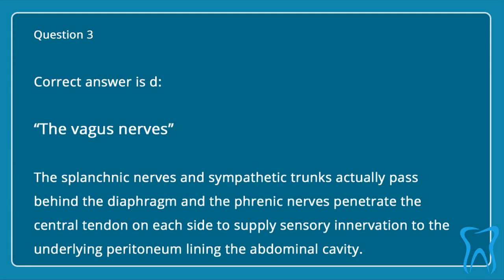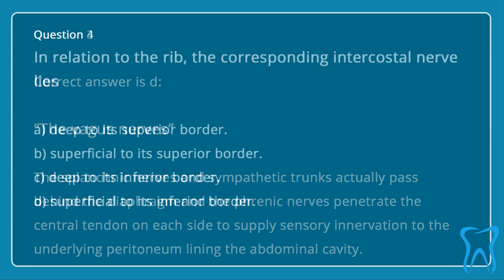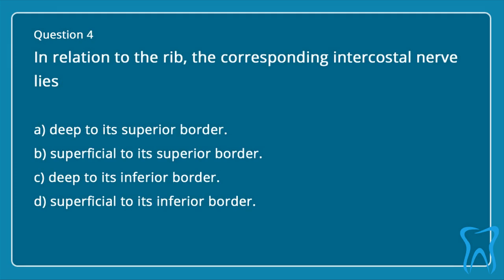The splanchnic nerves and sympathetic trunks actually pass behind the diaphragm, and the phrenic nerves penetrate the central tendon on each side to supply sensory innervation to the underlying peritoneum lining the abdominal cavity.